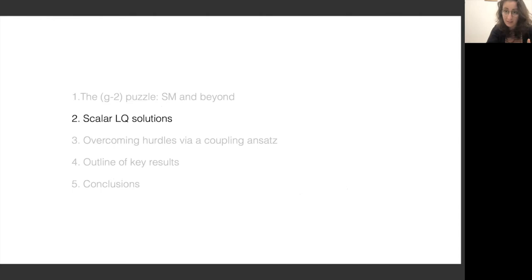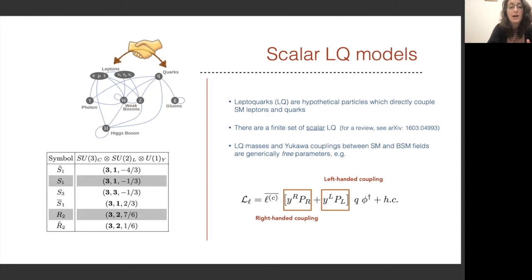So let's now talk about scalar leptoquarks. Earlier when I outlined the standard model, if we were to introduce scalar leptoquarks into the standard model, they would appear right about here as permitting a direct interaction between the standard model leptons and quarks. They're hypothetical particles and they directly couple the lepton and quark sectors. There are a finite set of scalar leptoquarks discussed in detail in this review. Here I've shown in a table the transformation properties of these leptoquarks. The masses and Yukawa couplings between standard model and BSM fields are generally free parameters in these type of models.